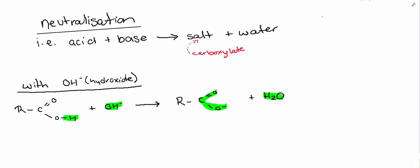It's important to take note that this is an ionic equation that's been written here. The spectator ions have been left out. So for example, if this was actually sodium hydroxide, what you would actually get over here would be a sodium carboxylate salt.